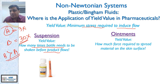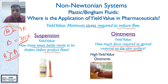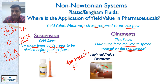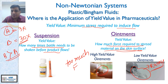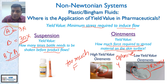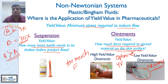For an ointment, the yield value translates to how much force you require to spread the material on the skin surface. A high yield value ointment requires too much force to rub on the skin, while a low yield value ointment will just run on your skin. You need to optimize the yield value for plastic ointments, and that is how you use this knowledge to develop really efficient dosage forms — whether it is a suspension or ointment.